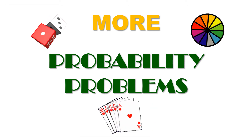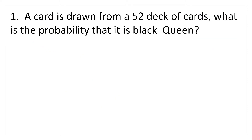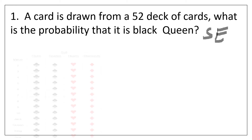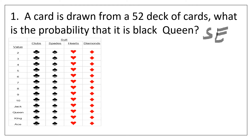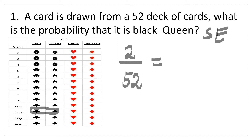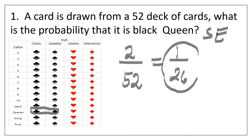Let's have more examples of probability problems and solve each one. Example number 1: a card is drawn from a 52-card deck. What is the probability that it is a black queen? This is a simple event since we are looking for one outcome. Looking at the diagram, there are only 2 black queens. So, 2 over 52. Reduced to lowest terms by dividing by 2, the probability is 1 over 26.